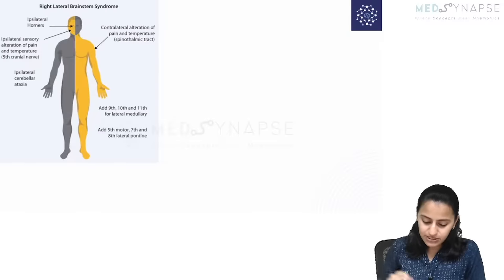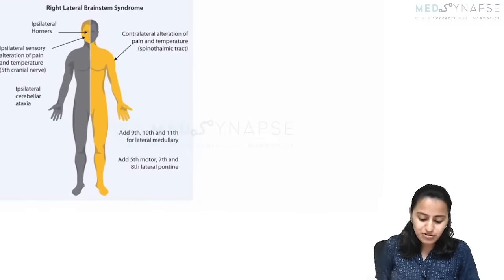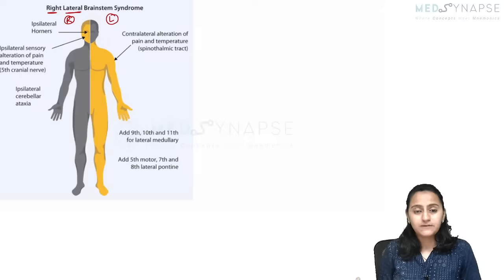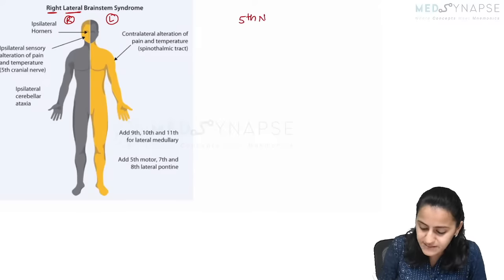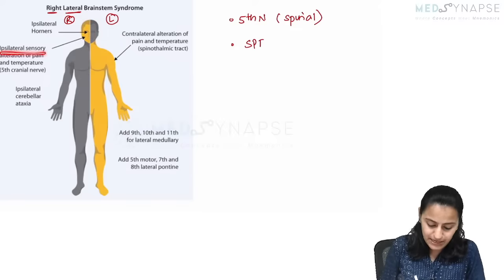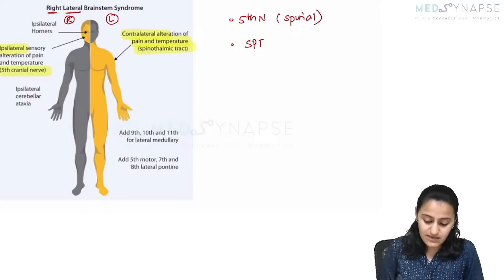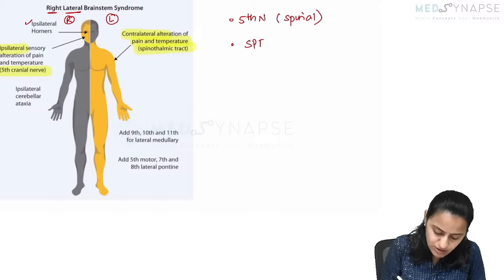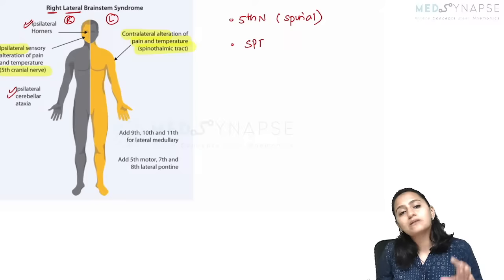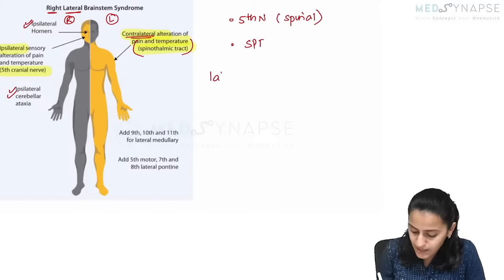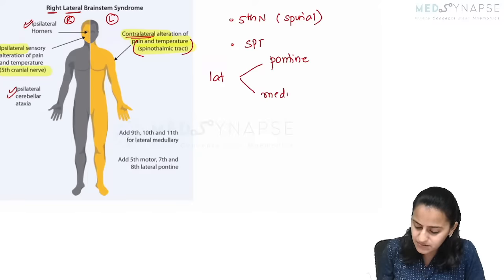Look at this image of the right lateral brainstem syndrome. The fifth nerve and the spinothalamic tract are affected. The ipsilateral sensory alteration is for the face — the fifth cranial nerve affects the same side face. The rest of the body sensation is from the opposite side, because of the spinothalamic tract. When you see same-side face loss with opposite-side body loss, remember it is a lateral brainstem syndrome. Horner's is ipsilateral, cerebellar ataxia is ipsilateral, and contralateral pain and temperature from the body.